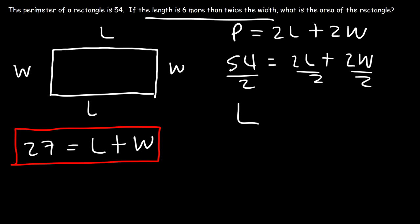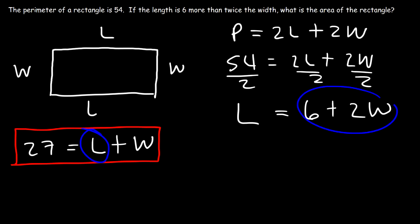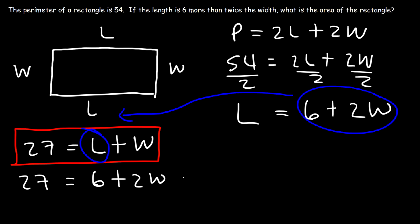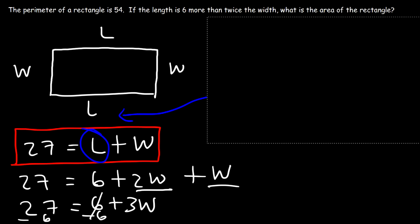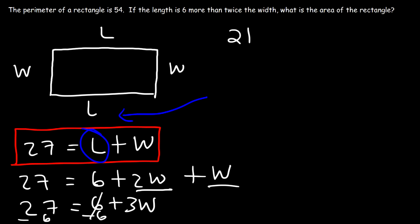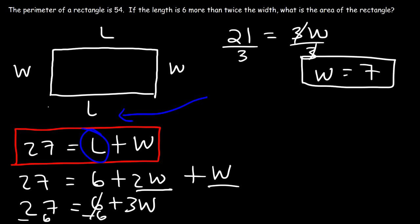We're told the length is 6 more than twice the width, so L equals 6 plus 2W. Substituting into L plus W equals 27: 6 plus 2W plus W equals 27, so 6 plus 3W equals 27. Subtracting 6 from both sides: 3W equals 21. Dividing by 3: W equals 7.